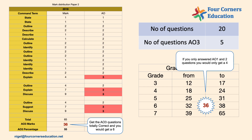If you only answered AO1 and AO2 questions, you could only possibly get a 4 — you couldn't get higher than a 4. You've got to answer these AO3 questions, because the AO3 questions are really the ones describing performance above a 5, and that's borne out in the data.